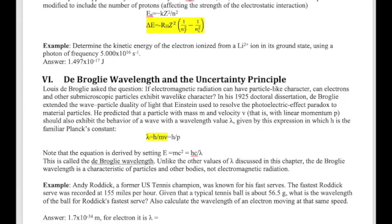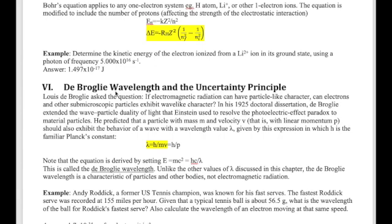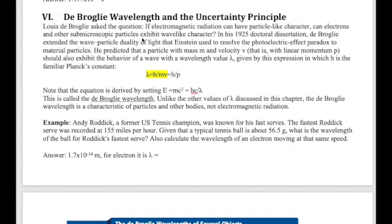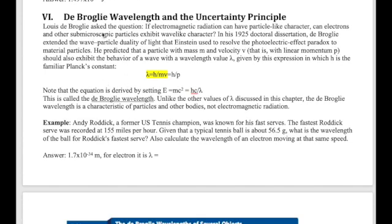We're going to move on from the idea of the electron being a special particle that Bohr proposed, to looking at exactly what kind of particle the electron is. Based on Planck's and Einstein's discovery that light can have both wave properties and can behave like a particle, what about something that is classically a particle behaving like a wave? This was first proposed by Louis de Broglie. The electron, which is the classical particle, should also be able to behave like a wave.